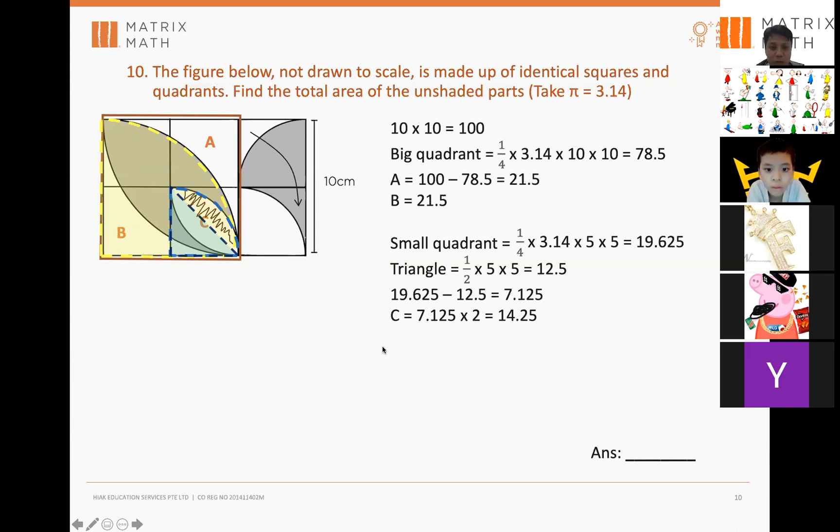If you cut this boomerang and you put it here, you get a small square. So, it's much easier, right? The area of small square is simply 5 times 5, 25. So, now we've got everything.